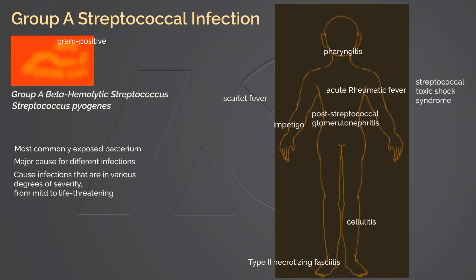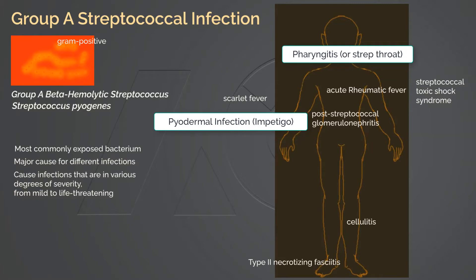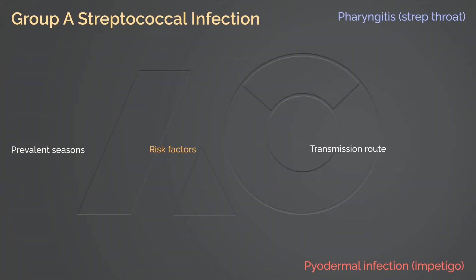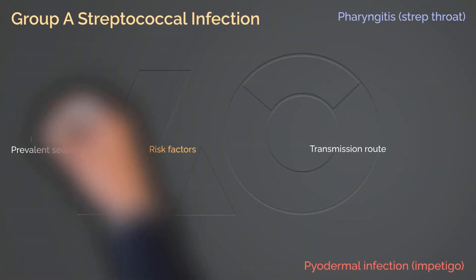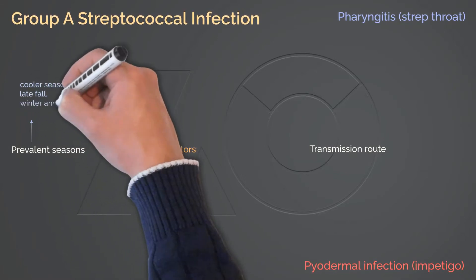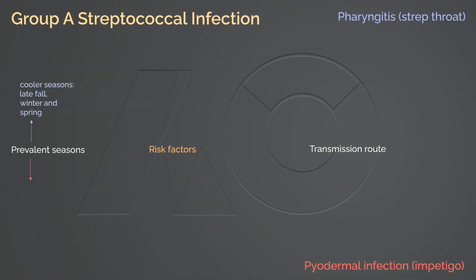In this lecture, we will focus on the two most common communicable diseases caused by Streptococcus pyogenes: pharyngitis or strep throat, and pyodermal infection or impetigo. We will discuss scarlet fever in the next lecture. While pharyngitis is more prevalent during late fall, winter, and spring, pyodermal infection prefers a warmer season — summer.